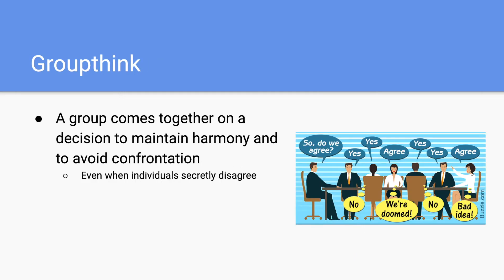Next up we have groupthink, and this occurs when a group comes together on a decision in order to maintain harmony and avoid confrontation. In the picture on the right, there's a bunch of people externally agreeing with their boss, but deep inside they secretly disagree. In order to avoid confrontation and maintain the harmony of the group, they've agreed to let things slide in order to keep things going.